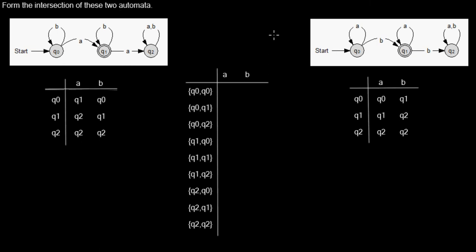Now I'd like to show you how to form the intersection of these two deterministic finite automata. In this video I want to be more detailed and I will use the transition tables for this. Here you have one automaton with its transition table and here's the other one with its transition table. What does the intersection mean?